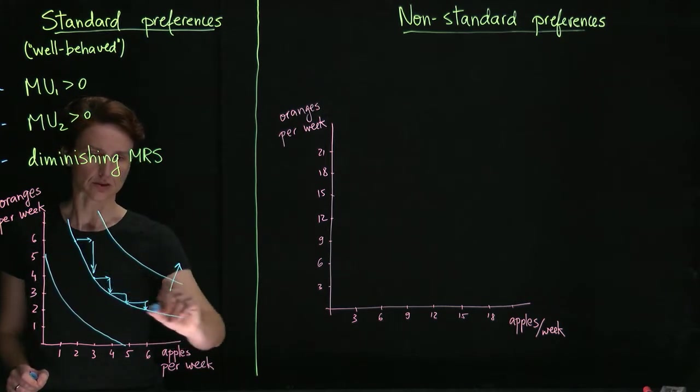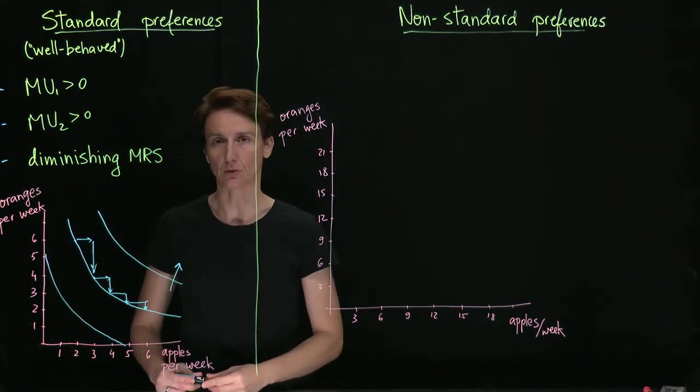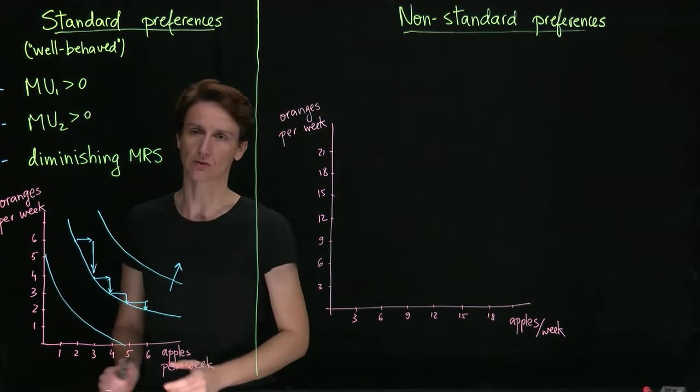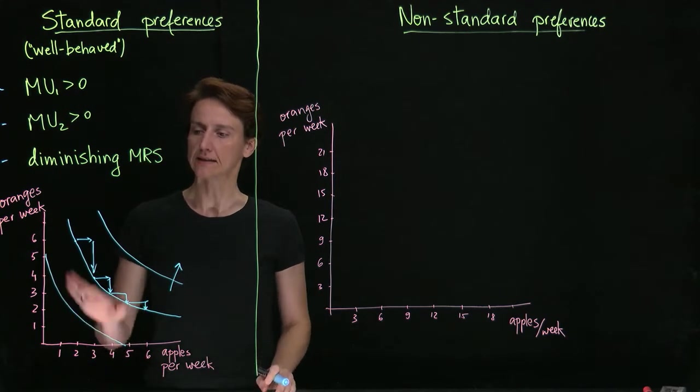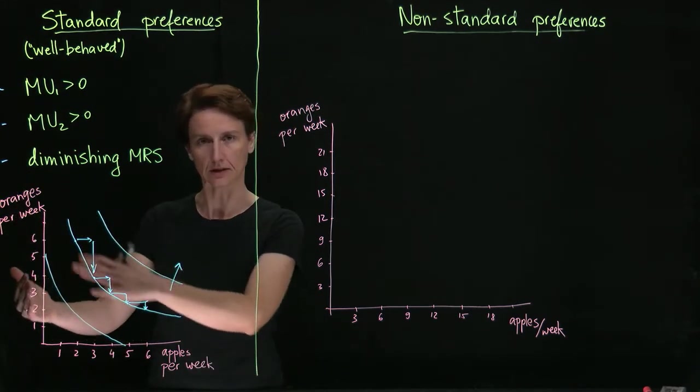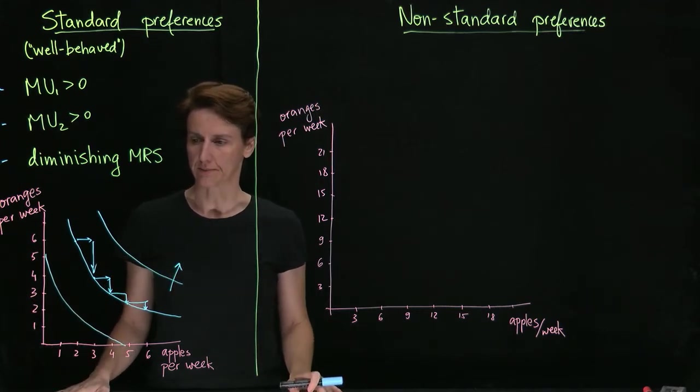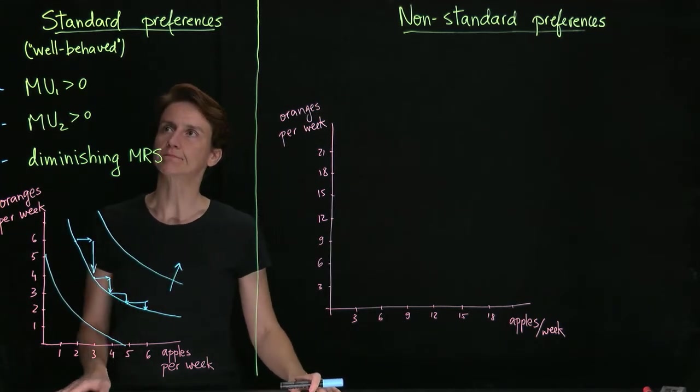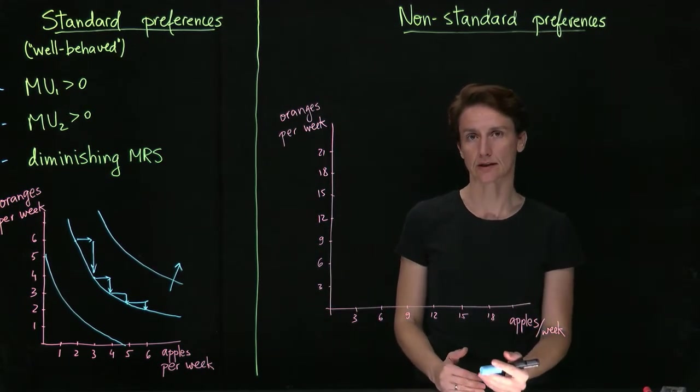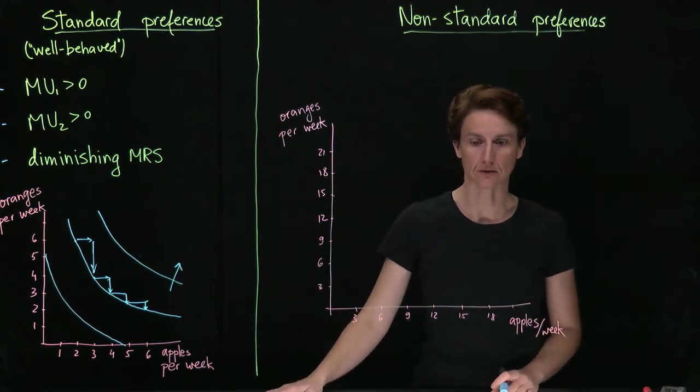Diminishing MRS leads us to this type of slope for indifference curves where they are bowed towards the origin. That in conjunction with downward sloping indifference curves gives us these predictable nice shapes to work with. However, it's worth spending a little bit of time to see what does it look like when one or more of these conditions fail.